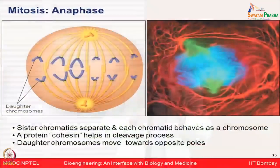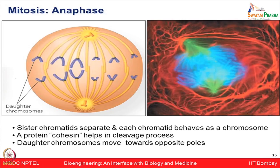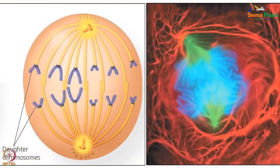During anaphase, the sister chromatids separate and each chromatid behaves as a chromosome. A set of complex proteins — especially the cohesins — help in the process of cleavage, and then the daughter chromosomes move toward opposite poles, as seen in microscopic images.